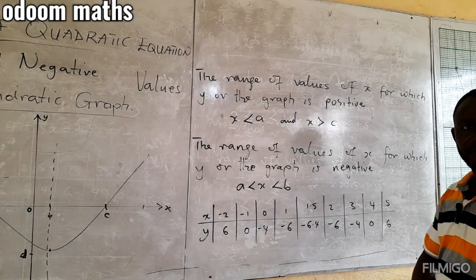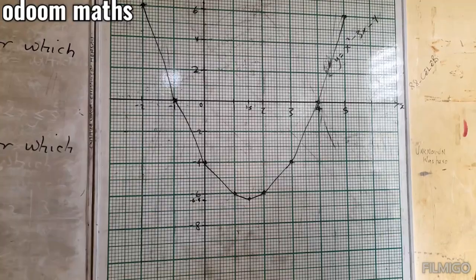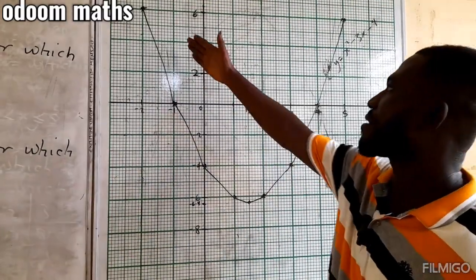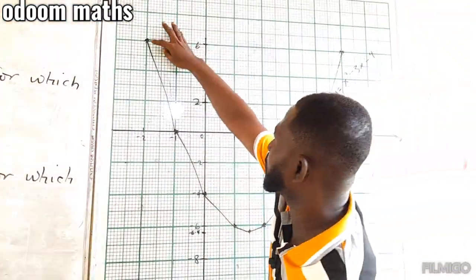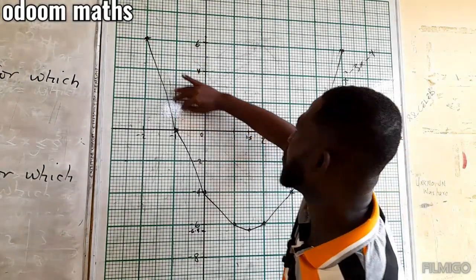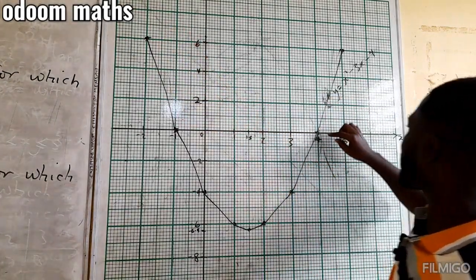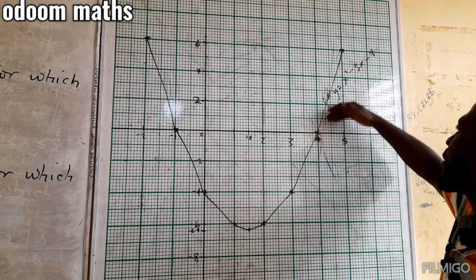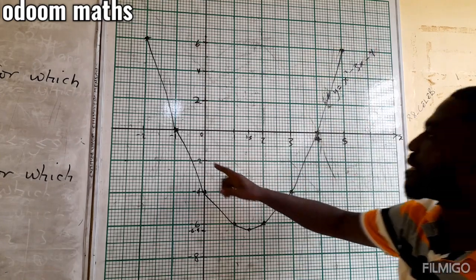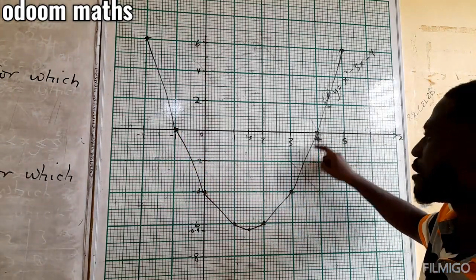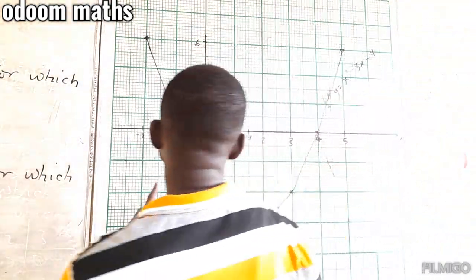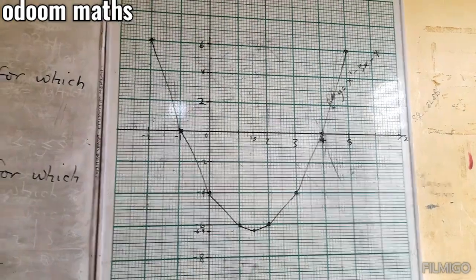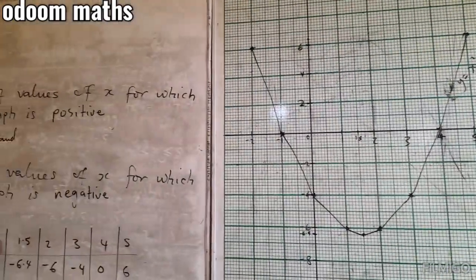Per our graph, we can all observe that from this point to this point, the y values here are all positive. Then, from this point to this point, the y values here are all positive. But, from this point through to this point, the y values here are all negative.